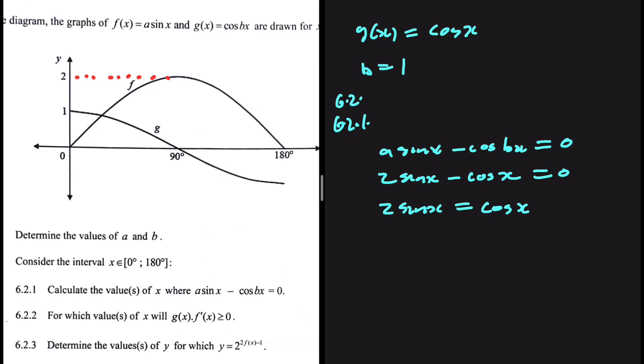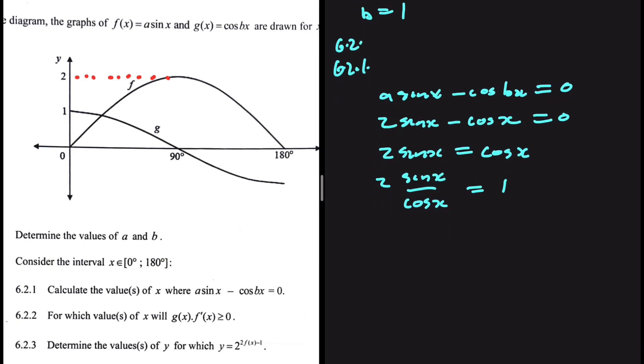If we say sin x divided by cos x, then we're going to have tan x. So let's divide both sides by cos x. If we do that, we're going to have 2 sin x divided by cos x equals 1. Cos x divided by cos x is 1. But instead of having sin x divided by cos x, we can write that as tan x. This equals 1.